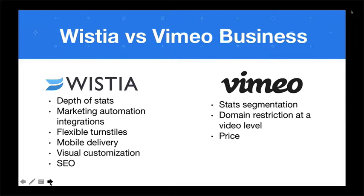We have flexible turnstiles. Vimeo Business has launched a turnstile-like feature which they call email capture, but it is essentially just pre-roll — you can gate a video to an email, but you don't get much more control than that. With Wistia, you can actually place the turnstile wherever you want in the timeline: mid-roll or post-roll. We know from our research that mid-roll email gates tend to convert much, much better than pre-roll.